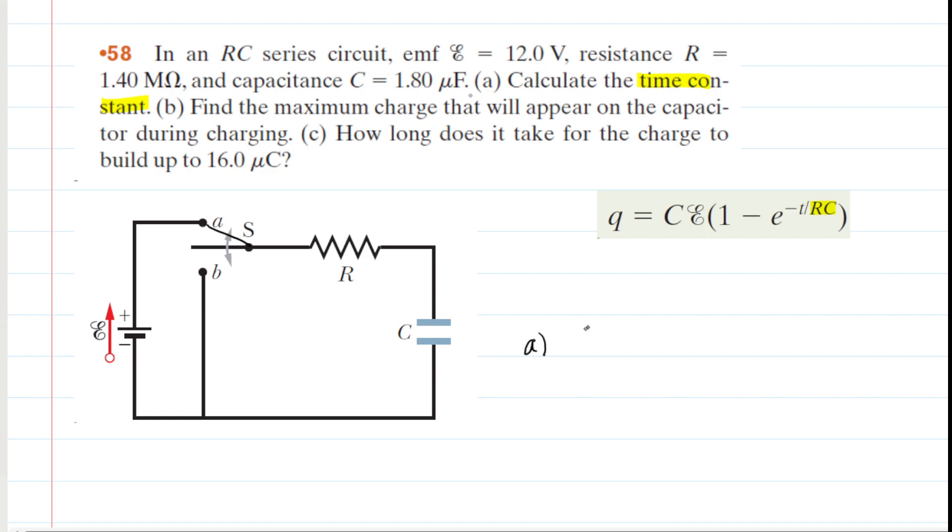For part A of the question, we're going to find the time constant symbolized by tau, and we do that by multiplying the resistance by the capacitance. Now both of those values are given in the problem, but they're given in non-standard units, so we have to be a little bit careful. For example, the resistance is given in mega ohms, so we're going to have to convert that into ohms by multiplying by 10 to the power of 6. So mega is 10 to the power of 6, that creates ohms.